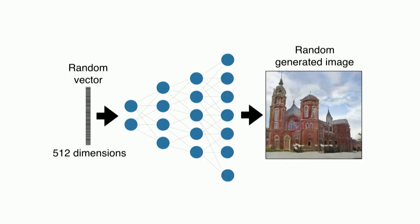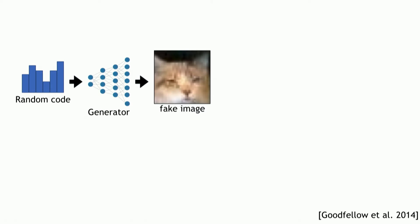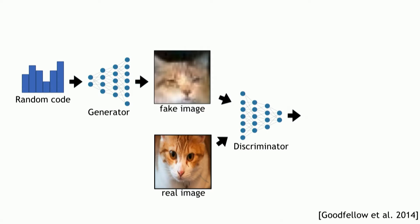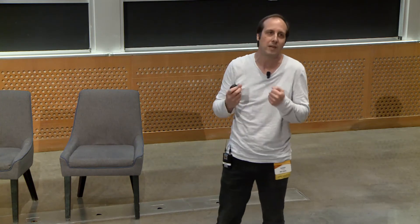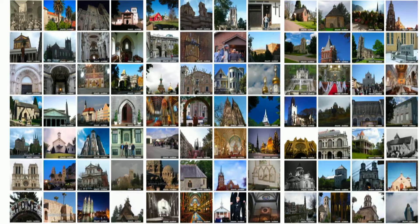There are more technical details, but this is basically 90% of everything that makes these systems. The way they are trained is you start with a random code, get the system to generate a picture. Now you have another system that takes as input one of these generated images or a real image. The game is that the generator has to learn to produce images that this discriminator cannot tell if the image is fake or real. And amazingly, this system converges and eventually the generator is really good at producing images that look real.